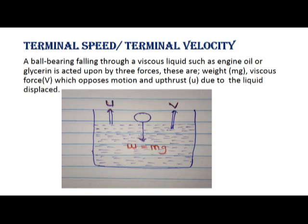Now let us discuss terminal speed or terminal velocity. Consider an experiment: you have a viscous liquid such as engine oil or glycerin. When a small ball bearing — like a pendulum bob — is dropped onto the surface of that viscous liquid, you observe the following behavior.